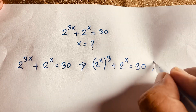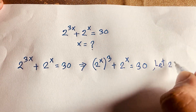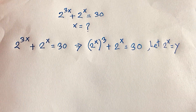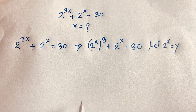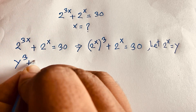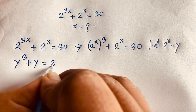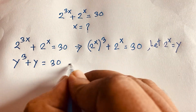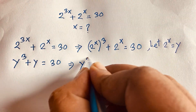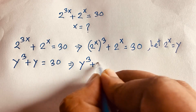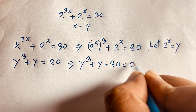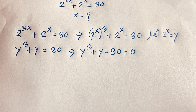Now, let 2 to the power x equal y. We can rewrite 2 to the power 3x as (2^x)³ = y³ using exponential law. So the equation becomes y³ + y = 30, which gives us y³ + y − 30 = 0.